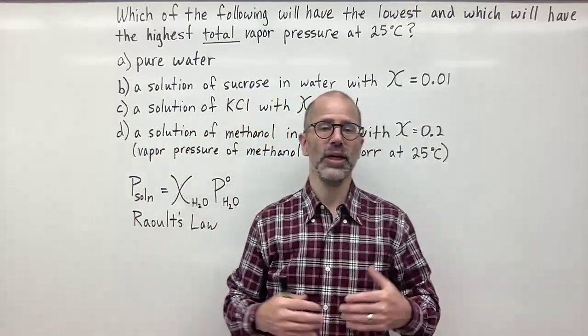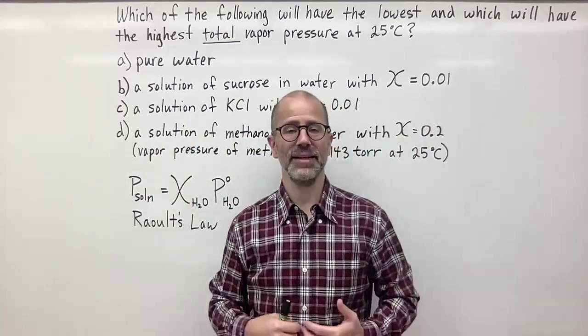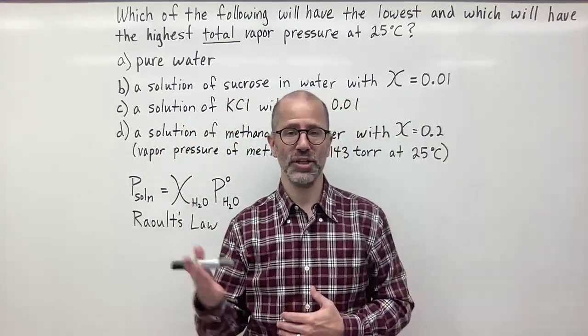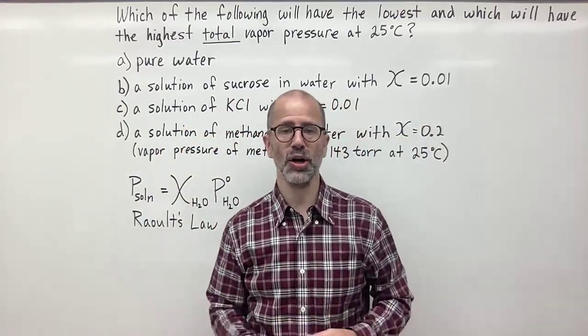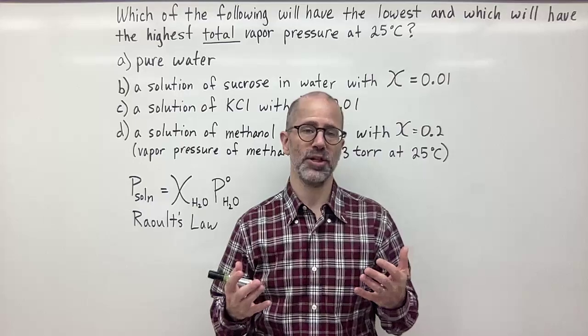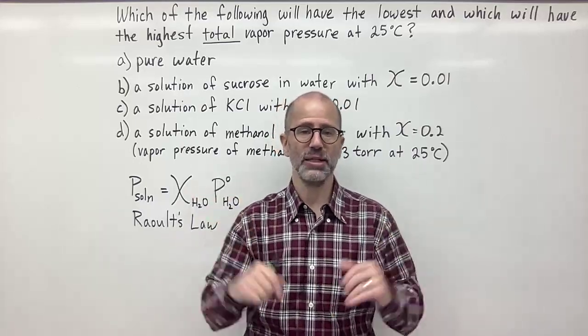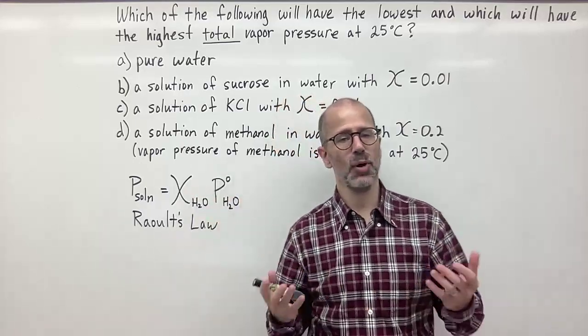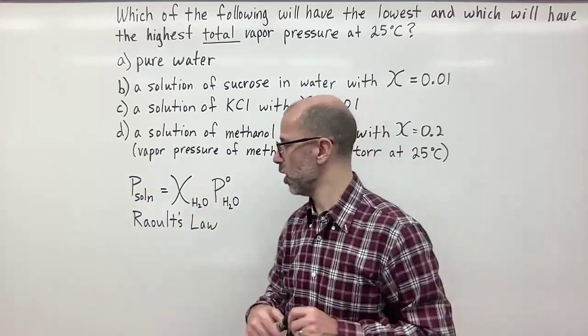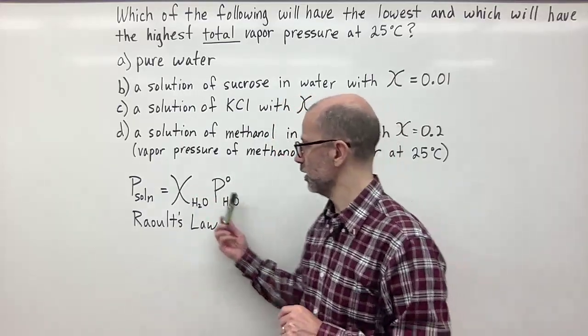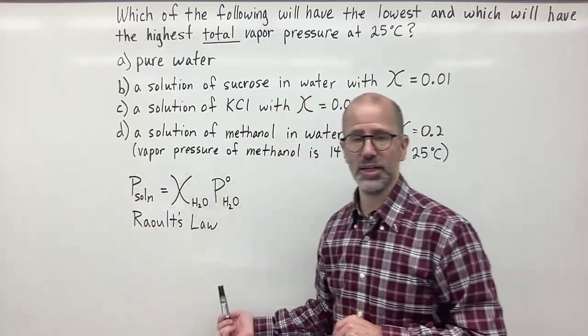By dissolving things in water, you lower the vapor pressure mainly because other particles take up space at the surface — fewer water molecules can evaporate and become vapor. So we'd expect that dissolving something in water decreases the vapor pressure, and that's what Raoult's law shows us. We can actually calculate these numbers using the equation.